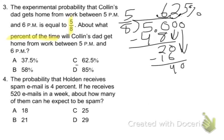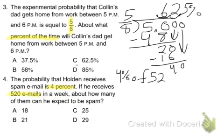On to number 4. The probability that Holden receives spam email is 4%. If he receives 520 emails in a week, how many of them can he expect to be spam? So there are two ways to do this problem. We could simply say: what is 4% of 520? And that's enough — we can just convert this into a multiplication problem.